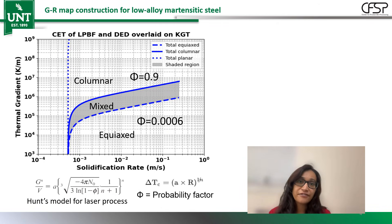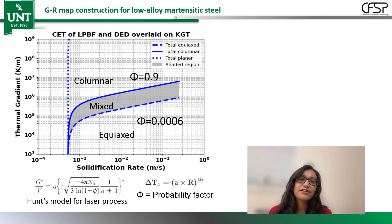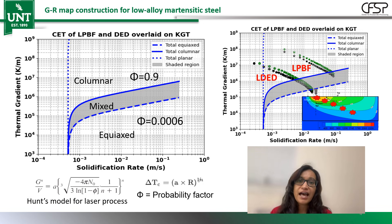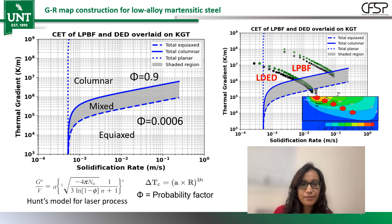Once we had the G and R values, then after a huge round of calculation — adding sugar, spice, and everything nice — we constructed this GR map based on the existing KGT framework but tuned specifically for our alloy, and then we overlaid the G and R values on top of this map.